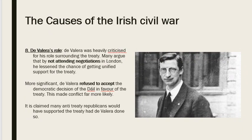Éamon de Valera's role was highly controversial regarding the Anglo-Irish Treaty. First, he didn't even attend the treaty negotiations in London, and many argue that by not attending he lessened the chance of getting unified support for the treaty. It was notable that the leader of the Irish government sent Michael Collins and Arthur Griffith — who weren't as experienced in negotiating as de Valera was — to negotiate instead. If de Valera had gone to London, more people would have supported the treaty because they would have thought: if our great man de Valera negotiated this, it must be a good thing.